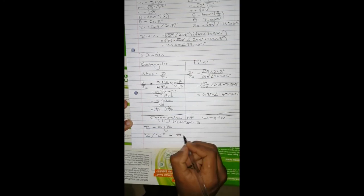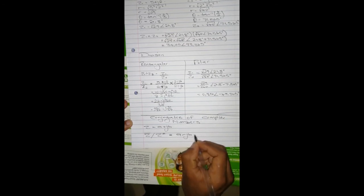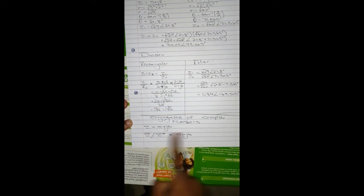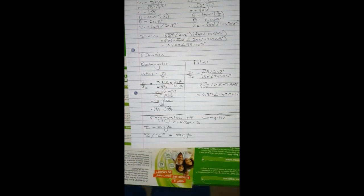...and an opposite sign. If it's plus, it becomes minus 'j', and then if it's a minus here, it becomes a plus. That's a conjugate, and you use this while dividing in rectangular form. And that's just about it.